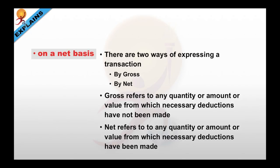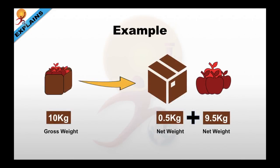There are two ways of expressing a transaction: gross or net. Gross refers to any quantity, amount or value from which necessary deductions have not yet been made, whereas net refers to any quantity, amount or value from which necessary deductions have been made. For example, if you buy 10 kg of apples and the box weighs 0.5 kg, then the gross weight is 10 kg, the net weight of the box is 0.5 kg, and the net weight of the apples is 9.5 kg.